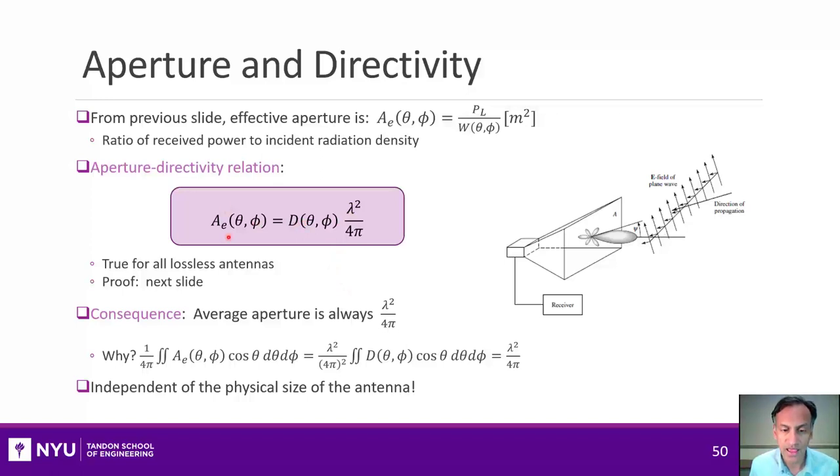Let me just state some key points about this simple antenna aperture-directivity relationship. First of all, one thing about this is that the average aperture is always going to be lambda squared over 4 pi. The reason why that's the case is because if you take the average over the angular directions, you will get the average of the directivity times this lambda squared over 4 pi, but remember that the average directivity of any antenna is 1. That means that no matter how big your antenna is, its average aperture will always just be the lambda squared over 4 pi.